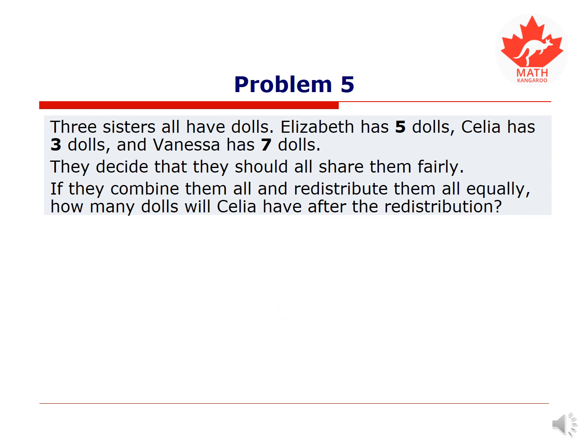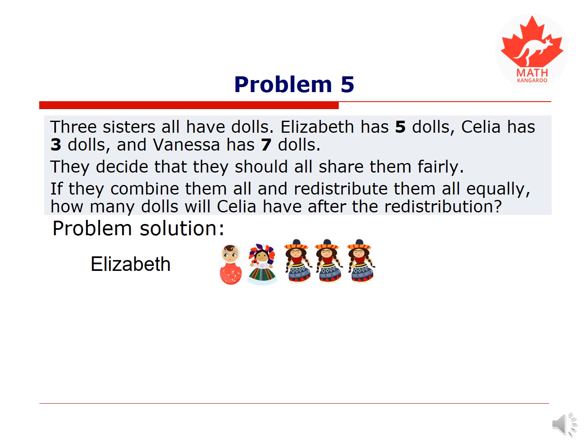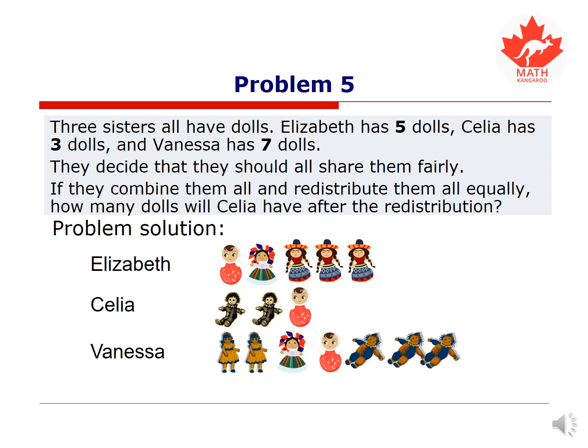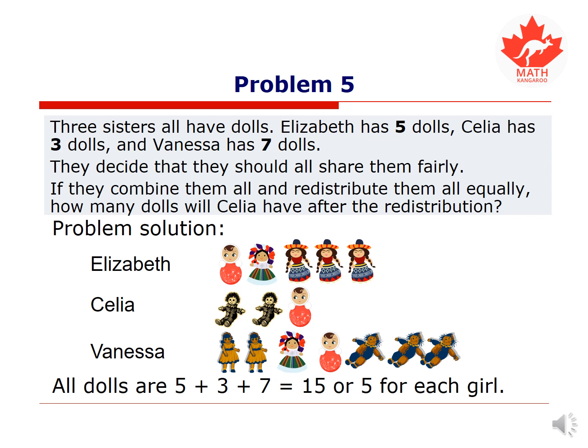Next problem. Three sisters all have dolls. Elizabeth has 5 dolls, Celia has 3, and Vanessa has 7 dolls. They decide to share the dolls fairly — combine them all and redistribute equally. All dolls total 5 plus 3 plus 7 equals 15, so 5 for each girl. Vanessa can give 2 of her dolls to Celia so that all girls will have 5 dolls each.